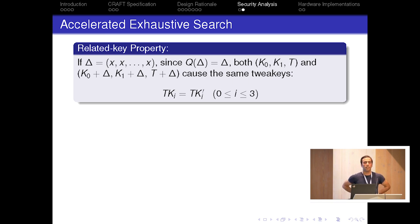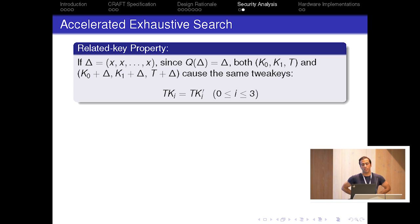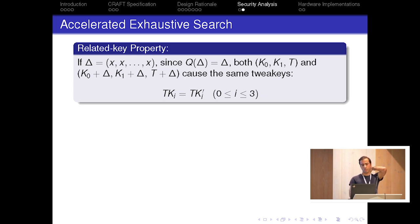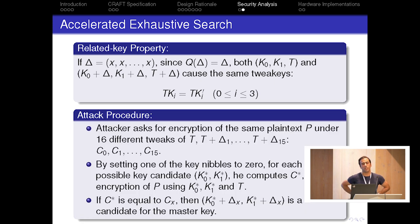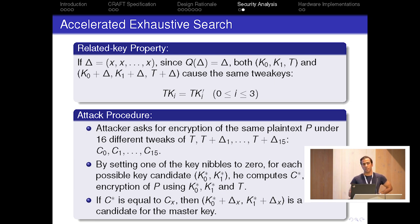The most promising attack is an accelerated exhaustive search, because of the related-key property of the tweak schedule. If a difference delta is such that all nibble values are the same, then the Q permutation of delta will not change its value. Then using either (K0, K1, tweak) or (K0⊕delta, K1⊕delta, tweak⊕delta) both produce the same tweakeys. An attacker using this property and asking for encryption of the same plaintext under 16 different tweaks can find the master key with 2^124 computations.